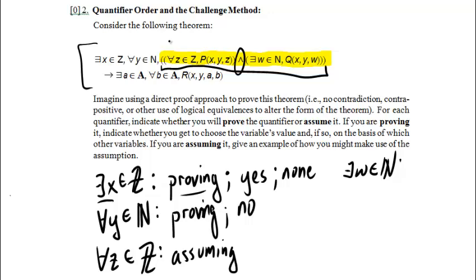And that means that I am assuming this universal right here. And if I'm assuming, I'm supposed to give an example of how I might make use of the assumption. When I assume a universal, I have a lot of power. I am assuming that every single integer has this property here with x and y. So for every integer z, the p property holds with x and y. That's a big assumption. I could plug in any integer I wanted and still know that this is true.